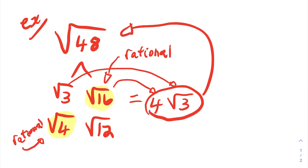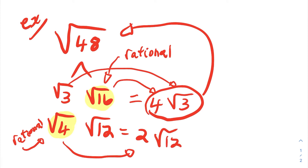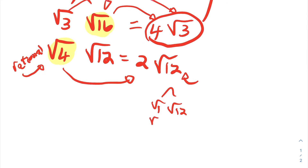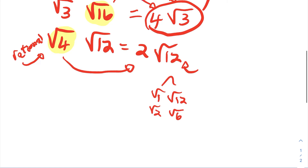Rational square roots are the ones we're interested in. When we take the square root of a perfect square, the result is a rational number. So the square root of 16 is 4, because 4 times 4 is 16, and then the irrational part — the square root of 3 — just comes along. That's a valid factorization of the square root of 48, and it's nice because one of the factors is just 4. The square root of 4 times square root of 12 also works — the square root of 4 is 2 — but the square root of 12 still isn't fully simplified; you can factor it further as square root of 3 times square root of 4.